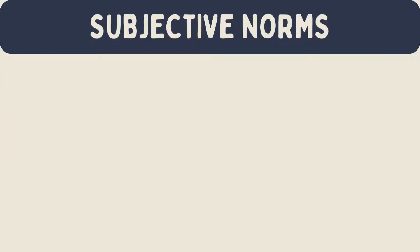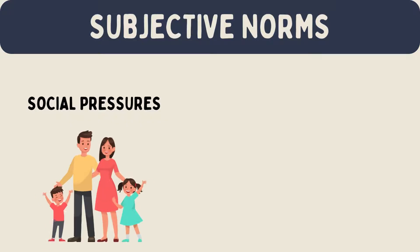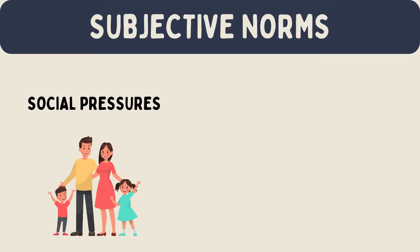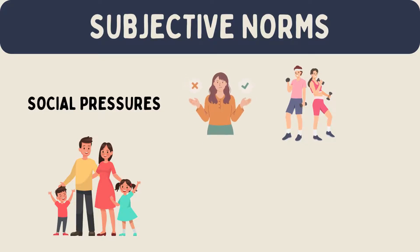Subjective norms are the social pressures a person feels — the expectations of people around them. For example, if a person's friends and family think exercising is important, the person is more likely to exercise. They want to fit in and meet these expectations.